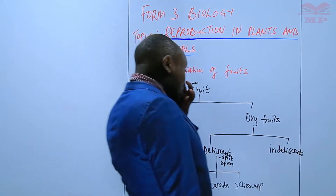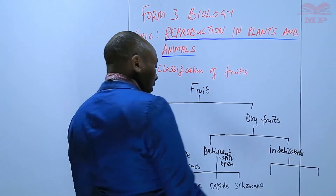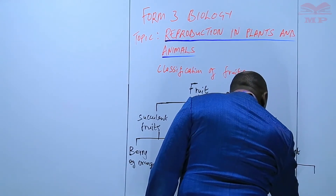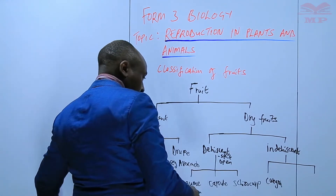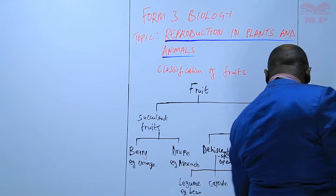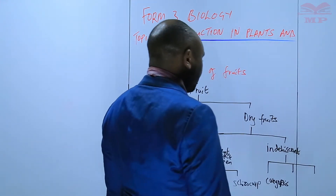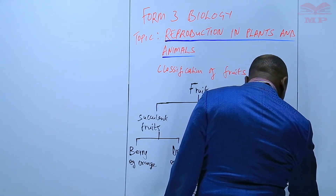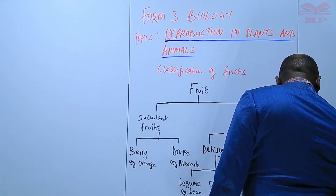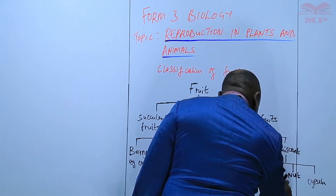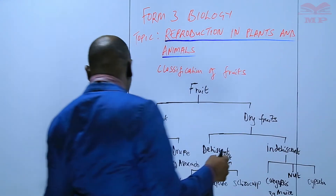The indehiscent fruits — those that do not split open — are also categorized into three. We have the caryopsis, for example maize. Another example, we have nuts. And then we have another one called a cypsela. So we will see the examples of the others as we continue.